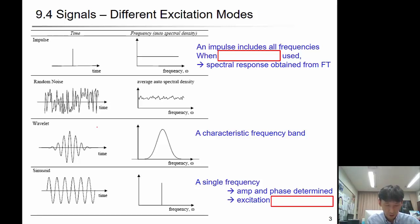These tables show different kinds of excitation modes. First is the impulse, and impulse includes all frequency when broadband input is used. Spectral response obtained from FFT will be flat. Random noise, if it's non-coherent noise or white noise, also has flat spectral density, meaning it's wideband containing many frequency ranges from low to high frequency.